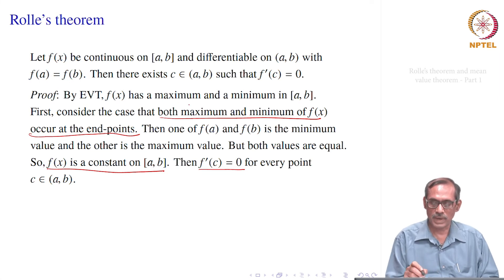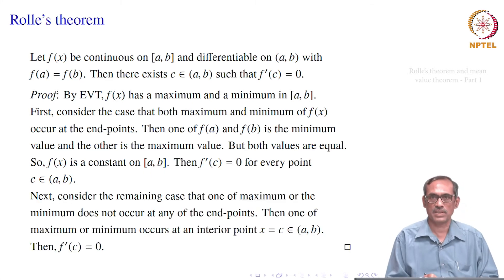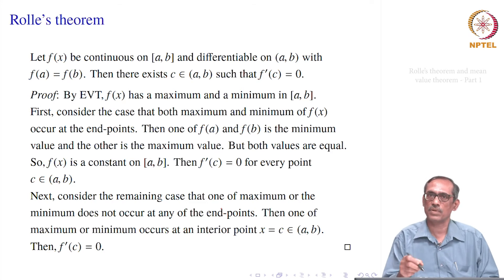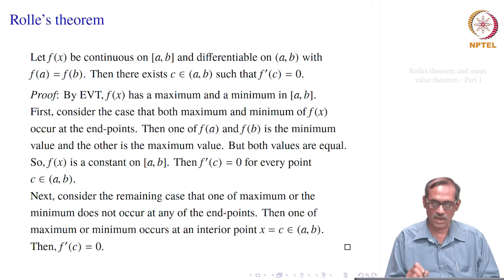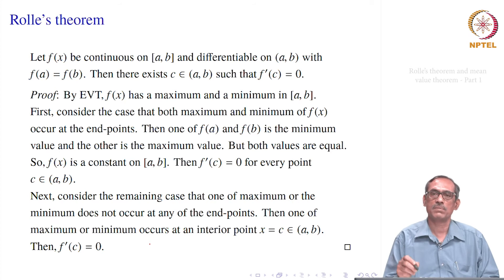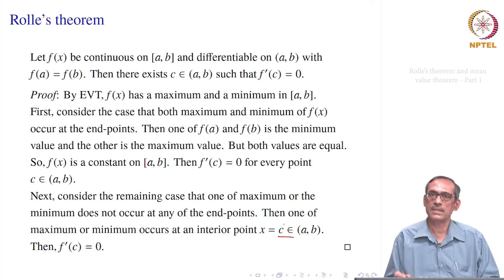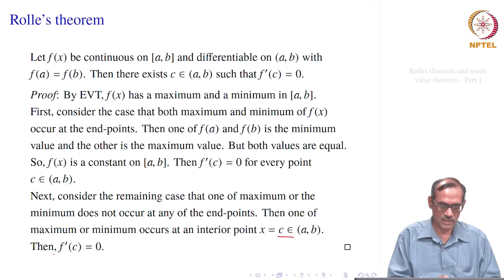In the other case, at least one of the maximum or minimum does not occur at an endpoint. Since f is continuous on [a, b], that extreme value occurs at an interior point c. At c we have a maximum or minimum, so c is a critical point. Since f is differentiable on the open interval (a, b), f'(c) exists and must equal 0. That is the conclusion of Rolle's theorem.